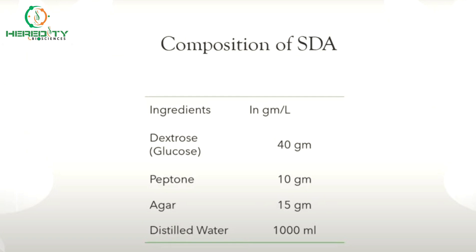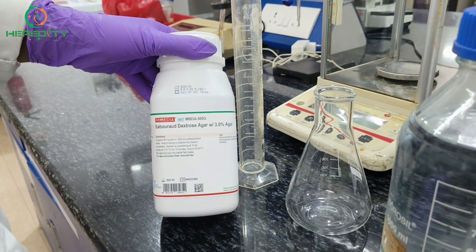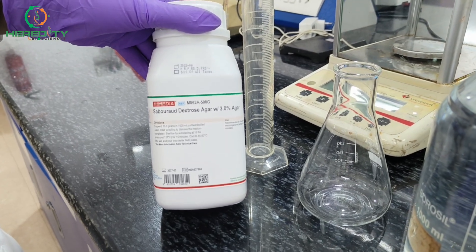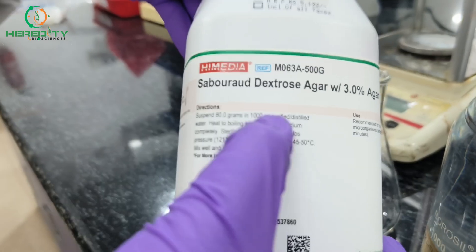Agar is a magical ingredient that solidifies our medium, providing a surface for the growth of fungi. This is the composition for the preparation of SDA media for one liter: dextrose 40 grams, peptone 10 grams, agar 15 grams, and one liter of distilled water. Here I am using the premix of Sabouraud Dextrose Agar from HiMedia, which mentions 80 grams in 1000 ml.